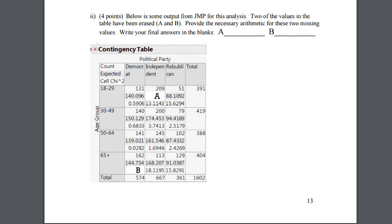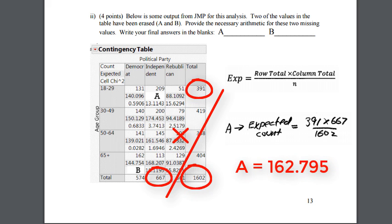Next, we have some output in the contingency table that's been blacked out. There are many good ways to answer these questions. For question A, we want the expected cell count for the 18 to 29 age group and the independent political party. We can do this the formula way by taking 667 times 391 over 1602. This is just row total times column total over grand total.